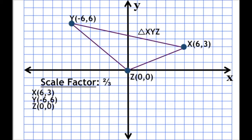This time we have a triangle with a scale factor of two thirds. So what do you think is going to happen — bigger or smaller? It's going to get smaller, because our scale factor is less than 1, so our new shape is going to be smaller. Let's take a look at our first point, X. X prime is going to be 6 times two thirds and 3 times two thirds. 6 times two thirds is 4, and 3 times two thirds is 2, so X prime is at (4, 2).